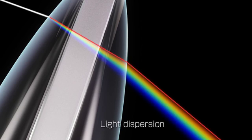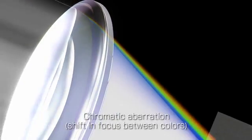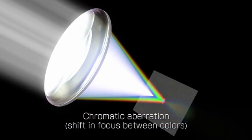Red light, which has a long wavelength, and blue light, which has a shorter wavelength, bend differently, causing the point of focus to shift slightly for each color. This phenomenon is called chromatic aberration.